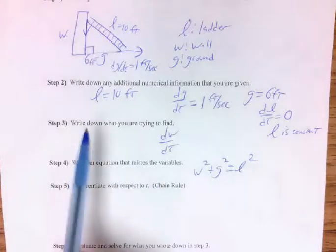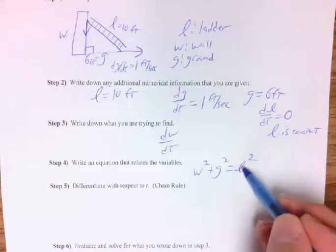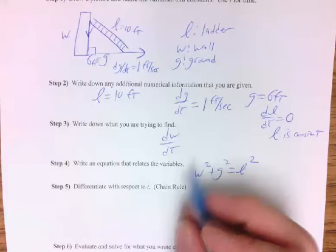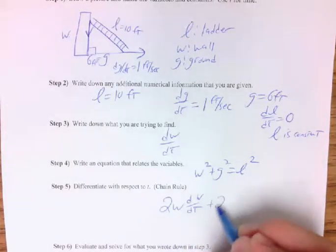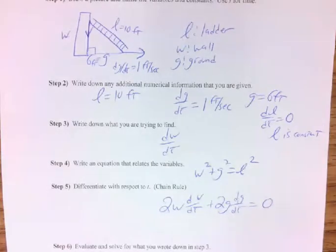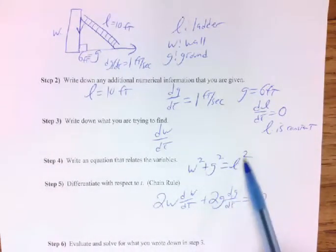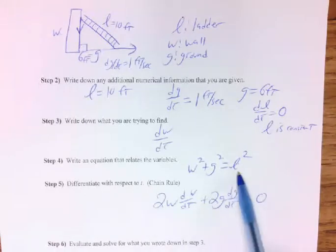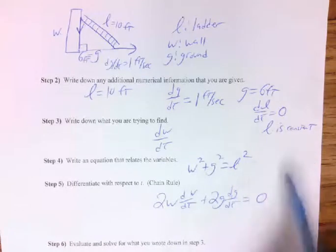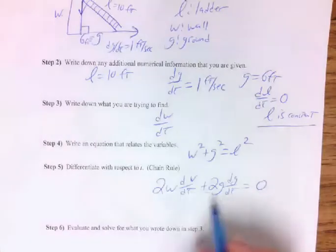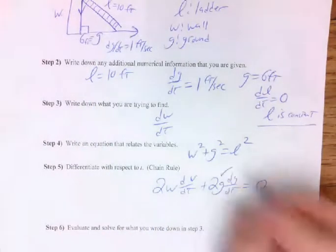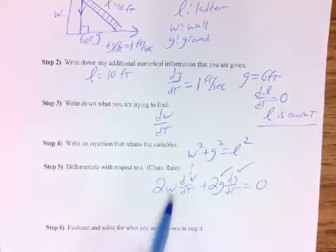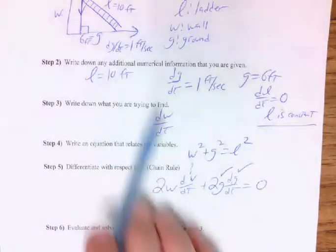If you don't believe me, the chain rule on L² gives 2L · dL/dt, but dL/dt is zero, so it's just zero regardless of what 2L is. If you recognize a constant, get it out of the way. Now let's clean this up — we know G = 6, dG/dt = 1, and dW/dt is what we're trying to find. But I don't think we ever found W — I don't have a value for W, and I can't have two unknowns.